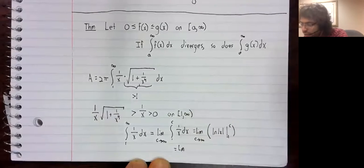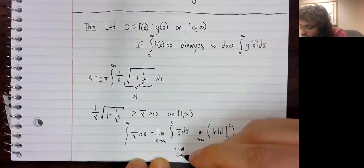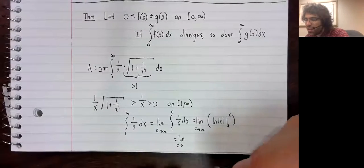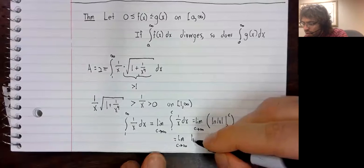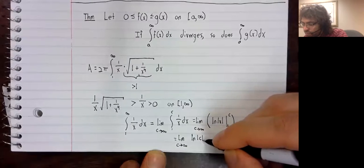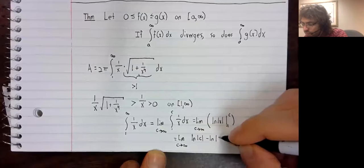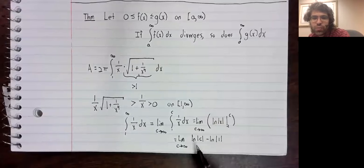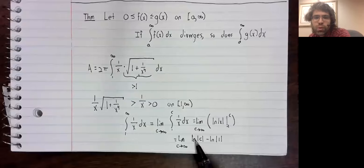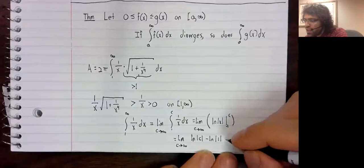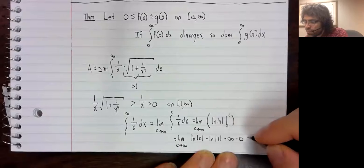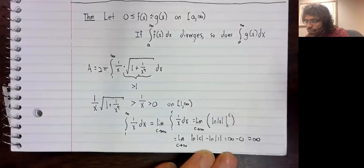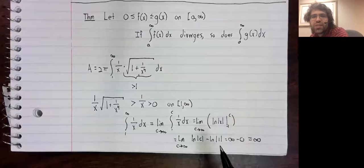So then we will compute this integral using the fundamental theorem. The natural log of one is zero. As c goes to infinity, the natural logarithm grows to infinity. It's slow, but this does go to infinity.